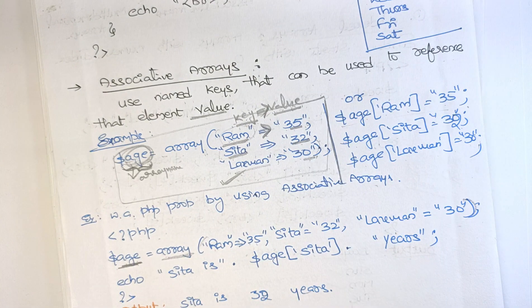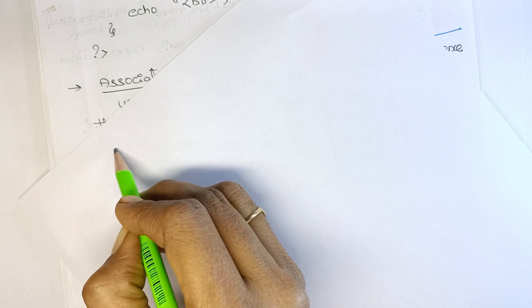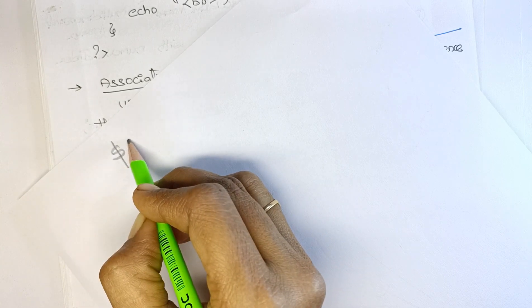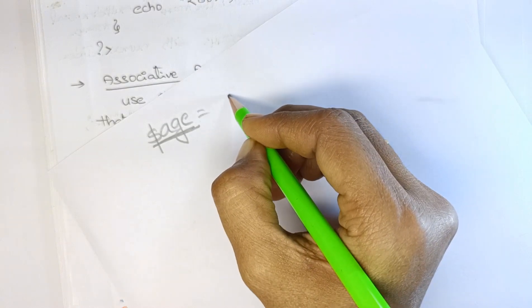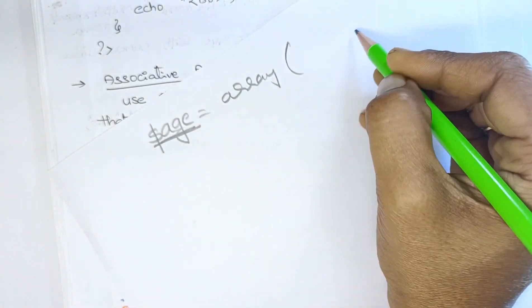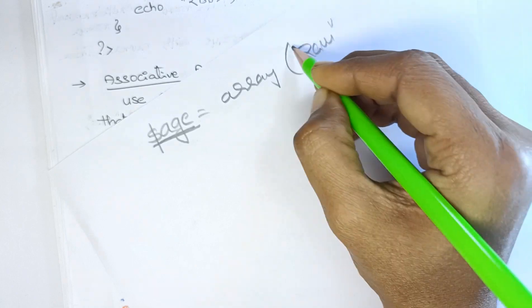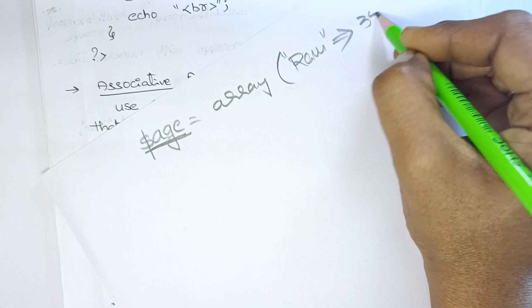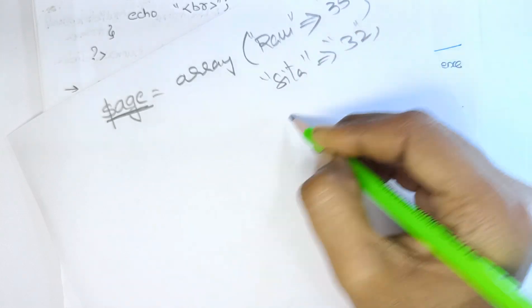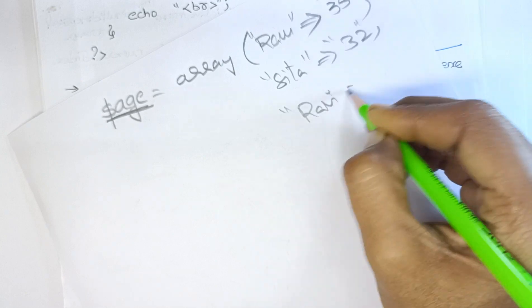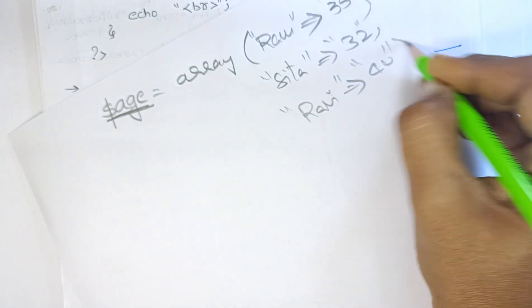To demonstrate how to use associative arrays, suppose I want to store a person's age. I create a variable: dollar age is equal to array function, and inside I write key-value pairs. For example: 'Ram' double arrow 35, 'Sita' double arrow 32, 'Ravi' double arrow 40, and so on. String values are written in double quotes.